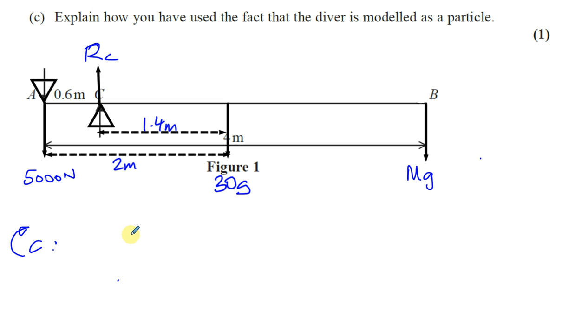So again, it's an equilibrium, and the clockwise moments are equal to the anticlockwise moments about any point. So I've chosen point C to eliminate the reaction force at C. So the clockwise moments about C are 30g times 1.4, plus Mg times - well, remember that distance was 4 minus 0.6, which is 3.4. And that's equal to the anticlockwise moments about C, which is 5,000 times 0.6.